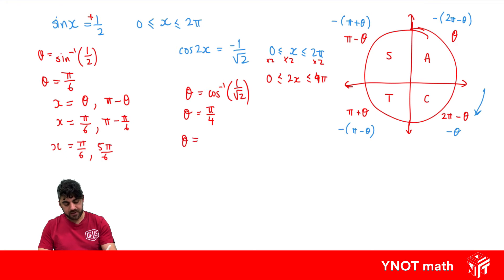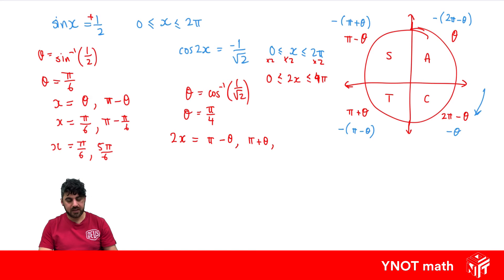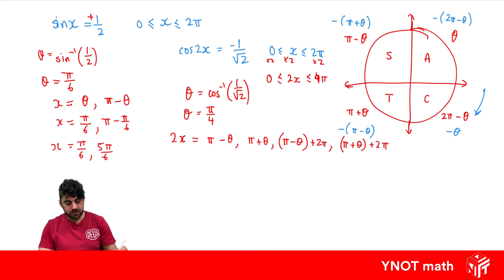We need answers in the second and third quadrant, so we're solving for 2x. In the second quadrant, 2x equals pi minus theta; in the third quadrant, 2x equals pi plus theta. Then, for the second revolution, we have pi minus theta plus 2 pi, and pi plus theta plus 2 pi. So those are the answers in the second quadrant, the third quadrant, the second quadrant plus one revolution, and the third quadrant plus one revolution.